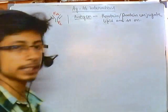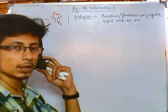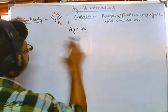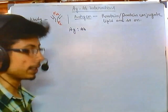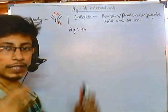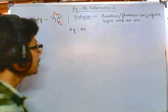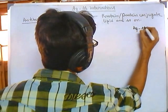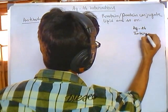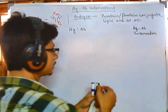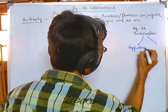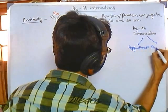Welcome back. We are talking about antigen-antibody interactions. In this video, I am going to talk about a very important concept: the antigen-antibody ratio — the ratio of antigen to antibody. This is very important because we are going to see the fate of antigen-antibody interactions. The fate is of two different kinds: either agglutination or precipitation.